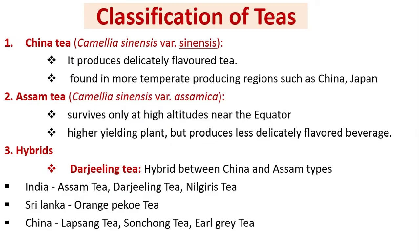Classification of teas: China tea — Camellia sinensis var. sinensis — produces delicately flavored tea, found in more temperate regions such as China and Japan. Assam tea — Camellia sinensis var. assamica — survives only at high altitudes near the equator; a higher-yielding plant but produces less delicately flavored beverage. Darjeeling tea is an example of a hybrid between the China and Assam types. Famous Indian teas include Assam, Darjeeling, and Nilgiri; in Sri Lanka, Orange Pekoe; in China, Lapsang Souchong and Earl Grey.